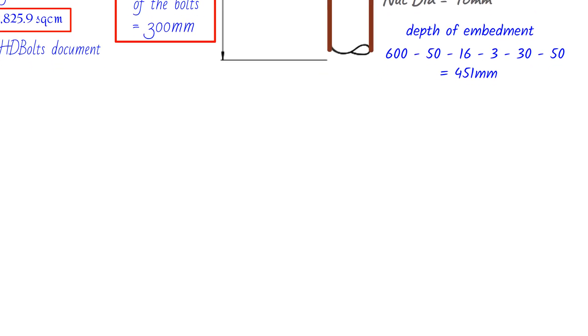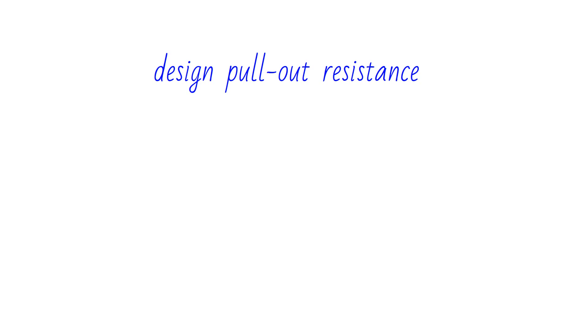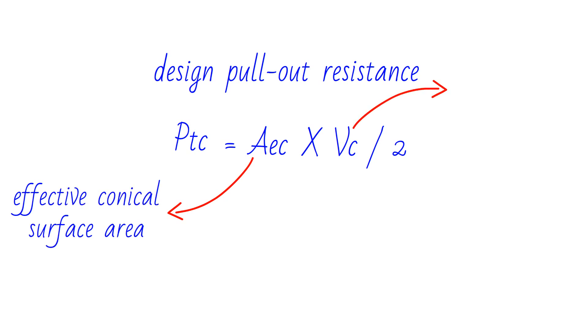To calculate the design pull-out resistance per bolt, we use the following formula: PTC equals AEC times VC divided by 2, where AEC is the effective conical surface area for two bolts, and VC is the shear strength of the concrete. This gives us a pull-out resistance of 218 kN.